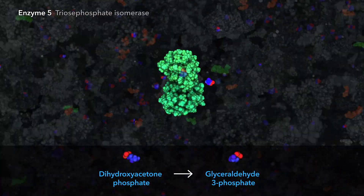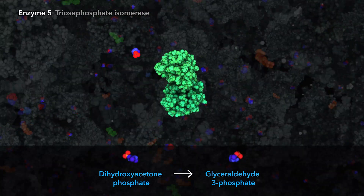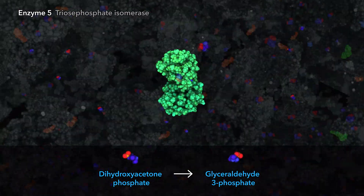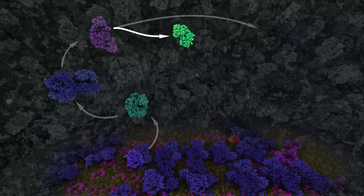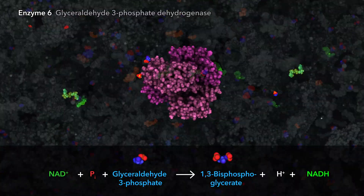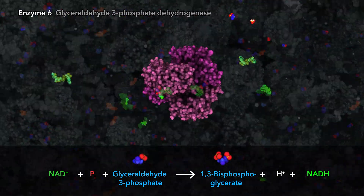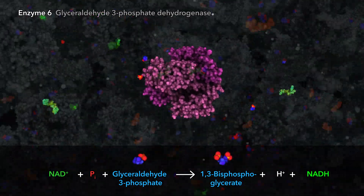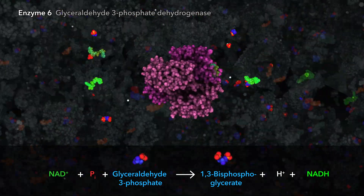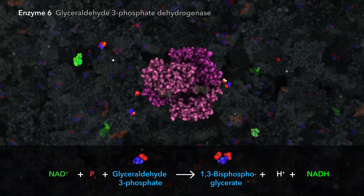The sugar isomer, dihydroxyacetone-phosphate, must first be converted through isomerization before continuing to the sixth enzyme. The sixth enzyme adds a second phosphate to glyceraldehyde-3-phosphate, creating 1,3-bisphosphoglycerate, while two electrons are transferred to NAD+, which is reduced to NADH.